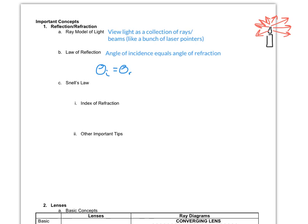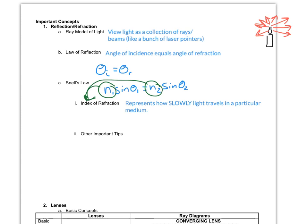Snell's law is next. Snell's law tells us that N1 times sine of theta_1 equals N2 times sine of theta_2. We use this when talking about refraction of light — the bending of light. The N's here represent the index of refraction. The index of refraction basically represents how slow light travels in a particular medium: the slower it goes, the higher the index of refraction. The angles are the angles light goes in and out at.